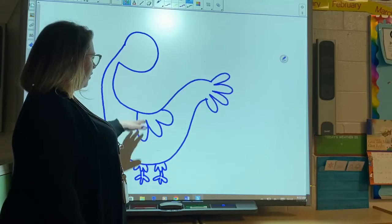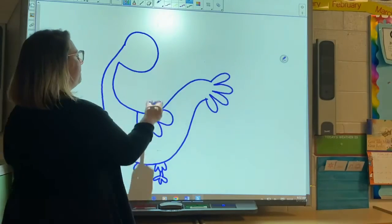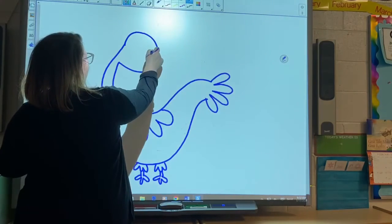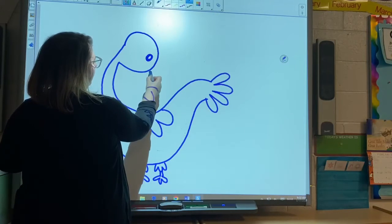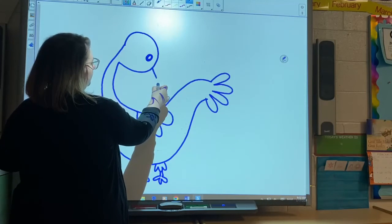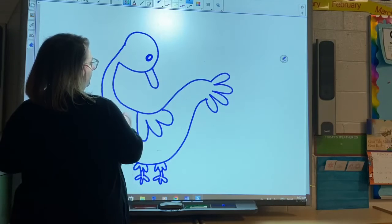Then our creature needs a face, okay? So I'm gonna have an eye right here and our creature needs what is that? It's a beak! I'm gonna draw a line right there.